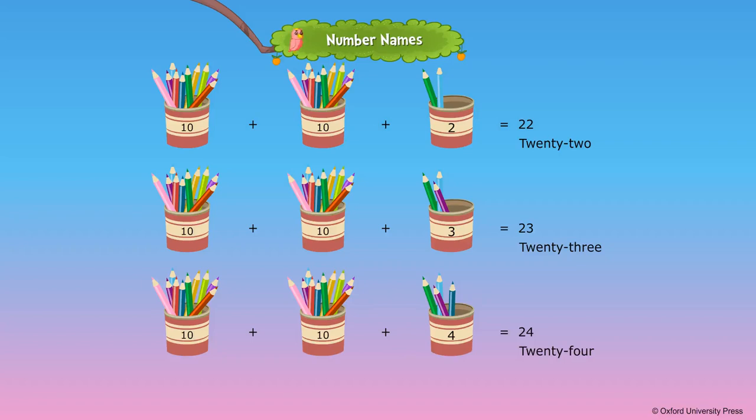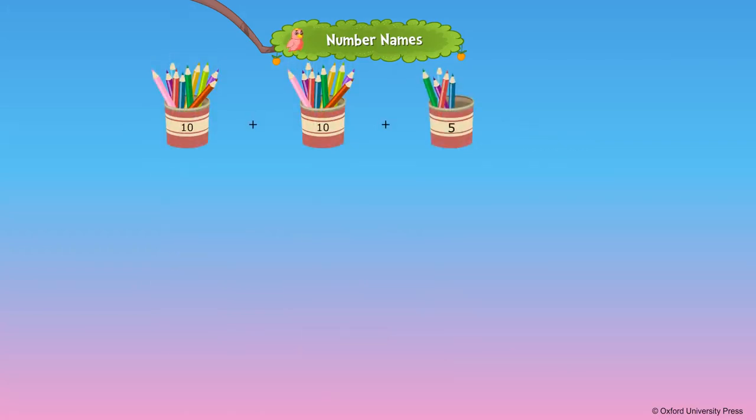20 plus 4 is equal to 24. 20 plus 5 is equal to 25.